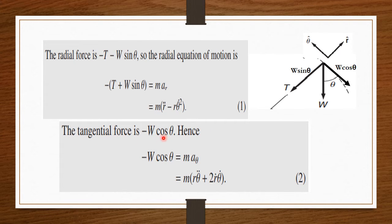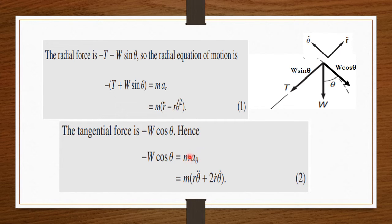Similarly, for the tangential force acting on mass m — it is opposite to the direction of the unit vector theta — there will be a minus sign. So: −w cosθ = m·aθ, where aθ is the angular acceleration term. aθ = rθ̈ + 2ṙθ̇. This is equation number two. These are the two equations of motion along the radial and angular directions.